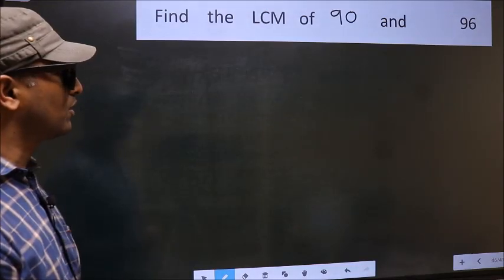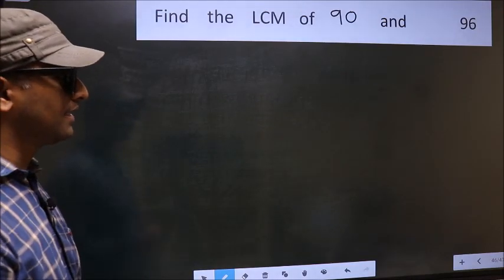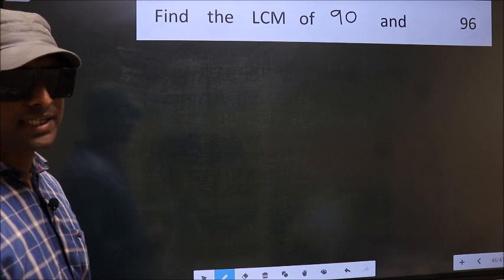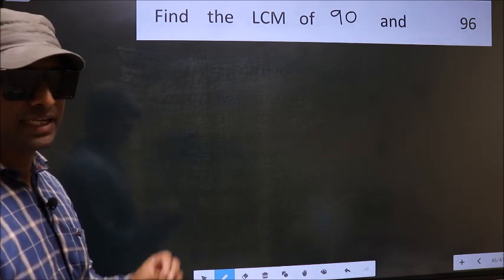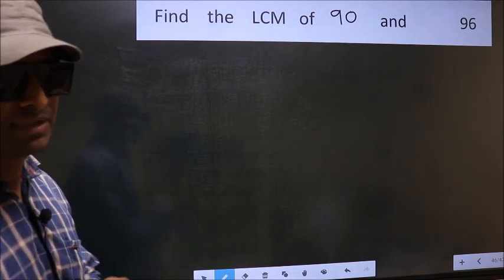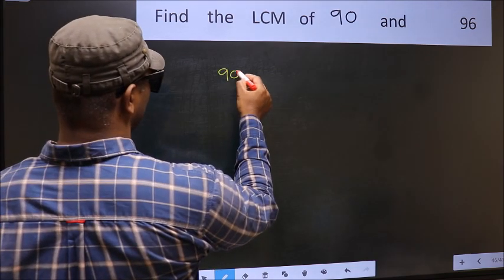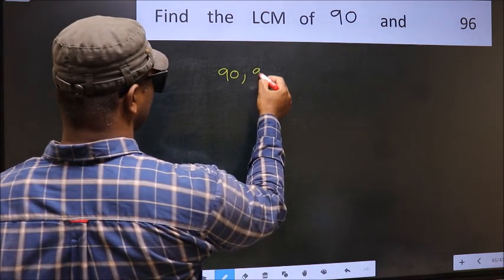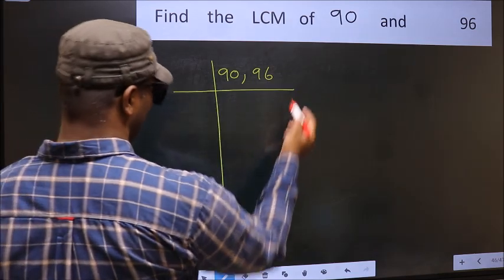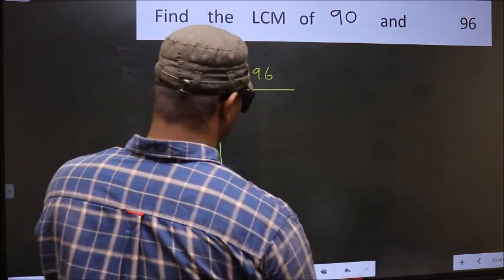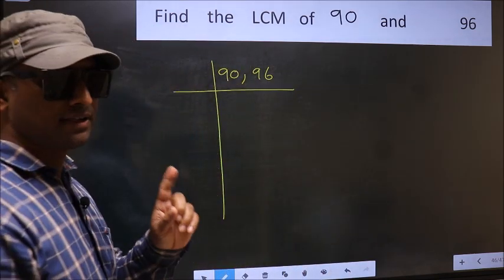Find the LCM of 90 and 96. To find the LCM, we should frame it in this way. Write 90 and 96. This is step 1.